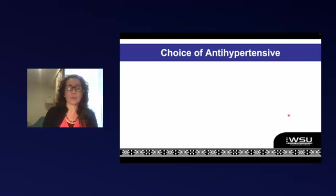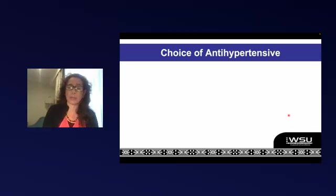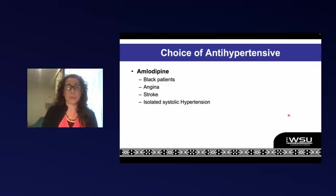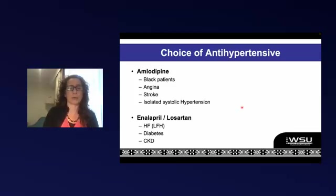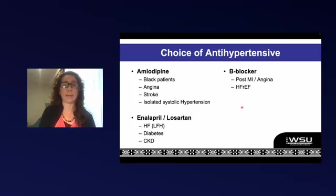In terms of which antihypertensive to choose: amlodipine is definitely better in Black patients, and is also a good choice in patients with angina, the elderly, those who've had a stroke, or isolated systolic hypertension. Enalapril is preferred in patients with heart failure — especially with left ventricular hypertrophy — and in our kidney and diabetic patients.